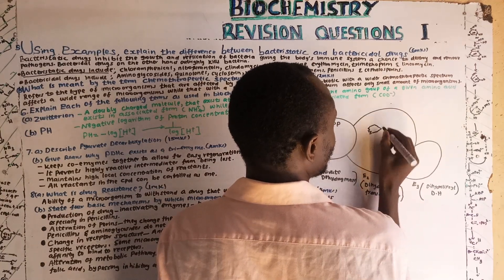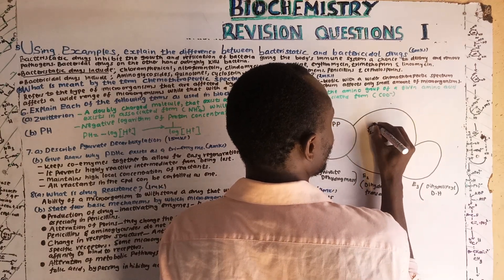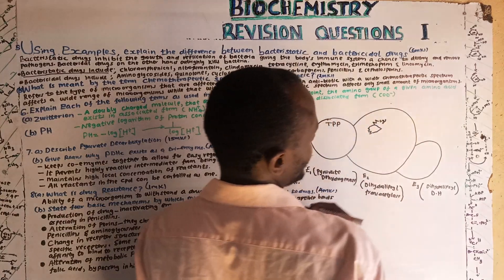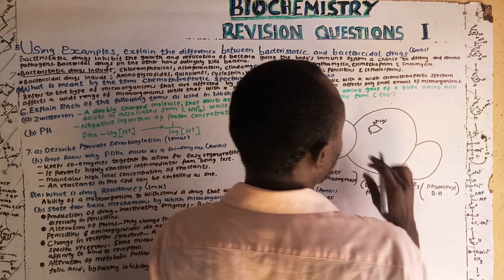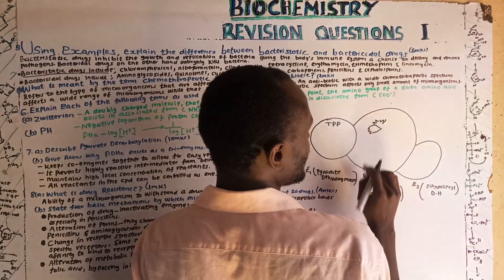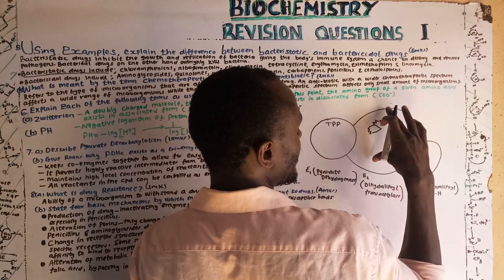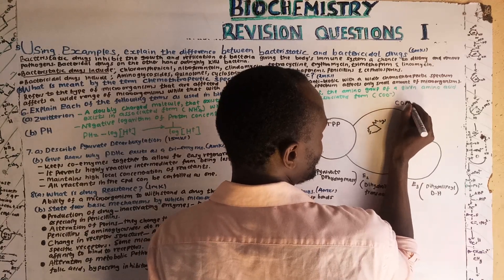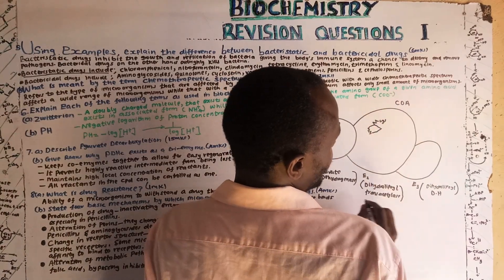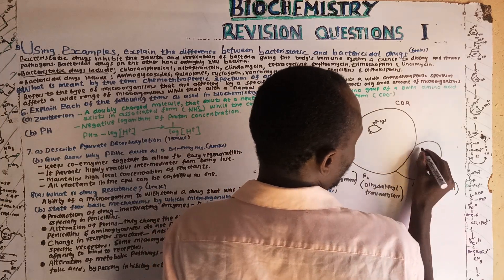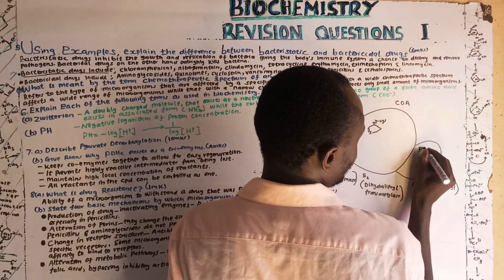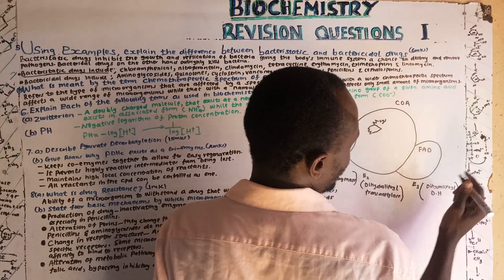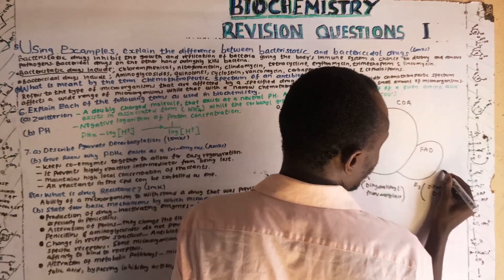Attached at E2 is lipoic acid, also known as lipoate. Free around E2, but not bound to it, is coenzyme A. Attached to E3 is FAD, and moving around E3 is NAD.